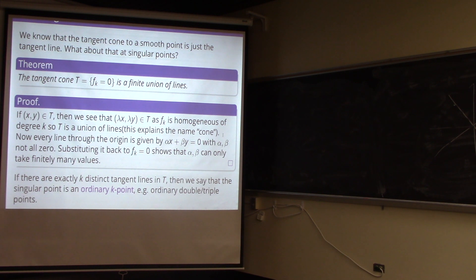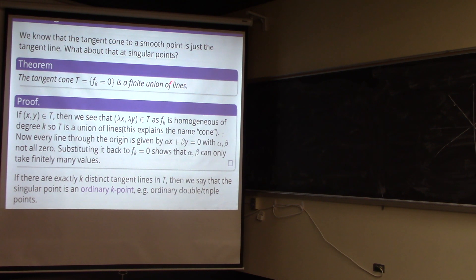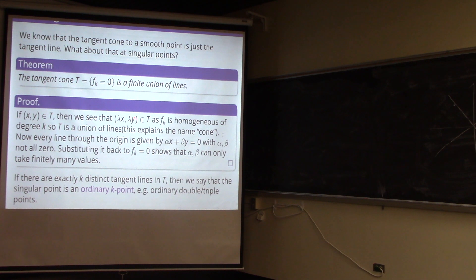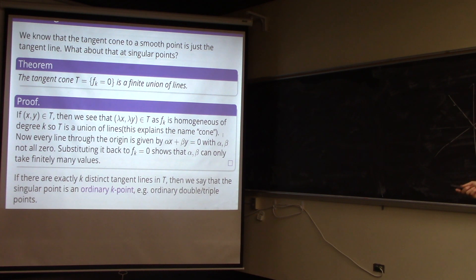So if you have a smooth point, the tangent cone is just f₁ = 0, which is a line. What if you have a singular point? The theorem is that the tangent cone is a finite union of lines. It's not far from being a line, but you have multiple tangent directions at a singular point. Proof: if you have a point in a tangent cone, since fₖ is homogeneous, scaling the coordinates by a scalar keeps the point in the tangent cone. So if the cone contains one point, it contains every point on the line through that point.